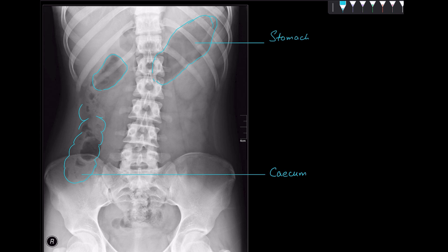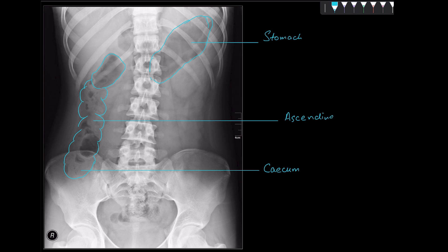These are the haustra — the classical appearance of the large intestine. You can see that this is the ascending colon. At this place, this is my hepatic flexure. I am calling it the hepatic flexure because you can see the presence of the liver here. My ascending colon makes a bend at this point, and this bending part is known as the hepatic flexure.